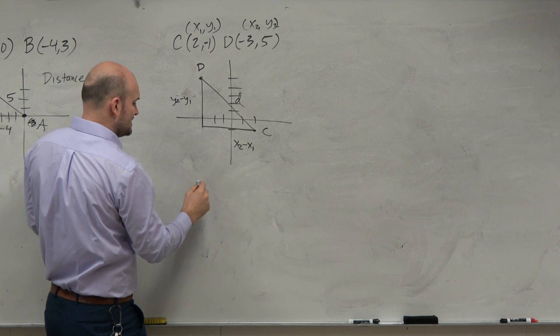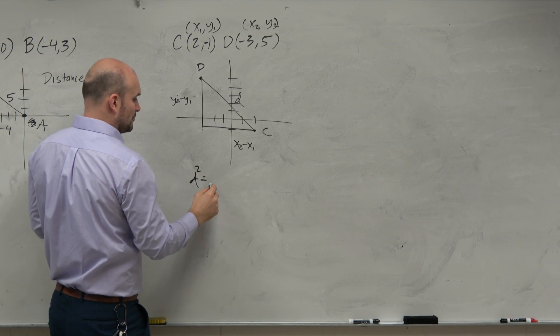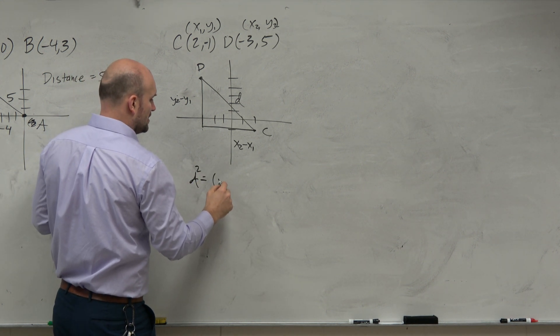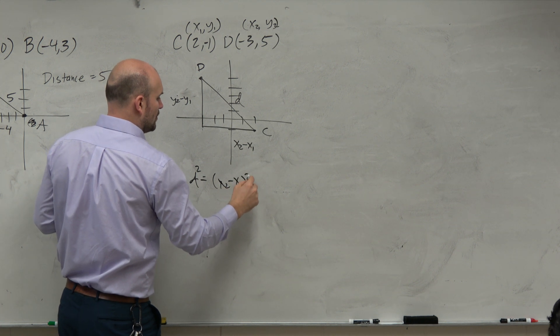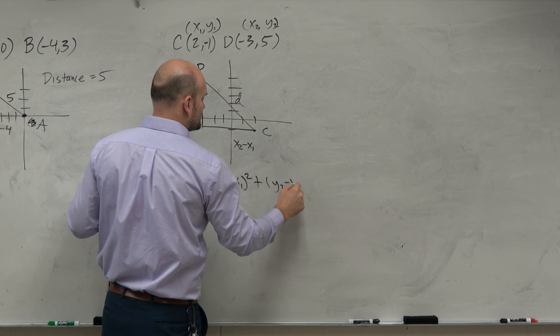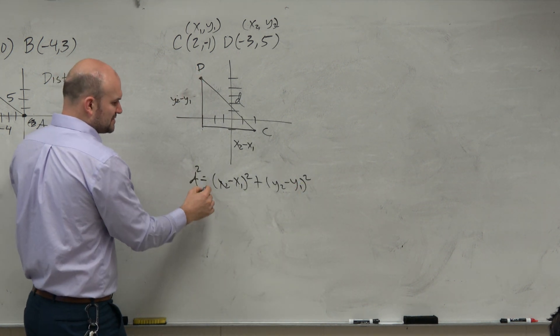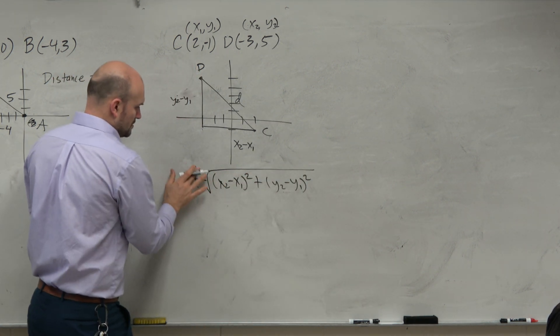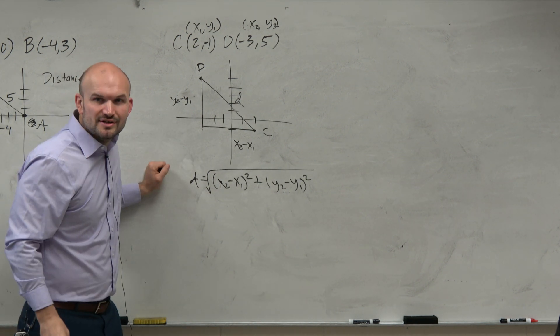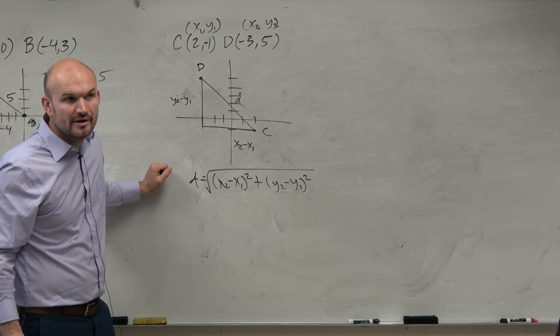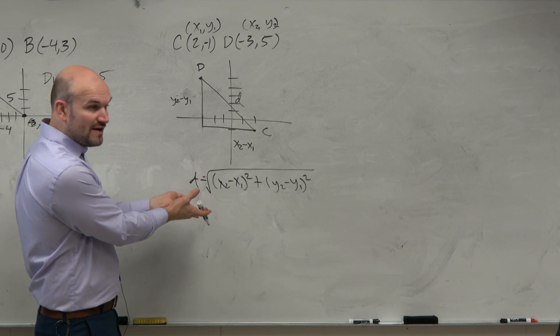Then we can say that distance squared equals x2 minus x1 quantity squared plus y2 minus y1 quantity squared. And really, instead of squaring, we just want to take the square root. And then what do you know? There's the distance formula, right? Now we can just plug in our values.